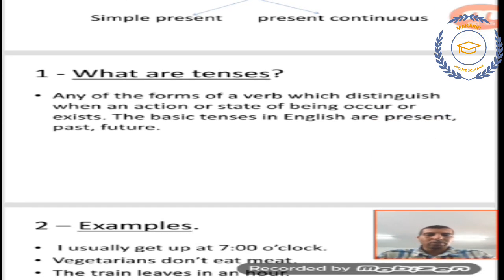A question comes to our mind: what are tenses? Tenses, any of the forms of a verb which distinguishes when an action or state of being occurs or exists. The basic tenses in English are present, past, and future.